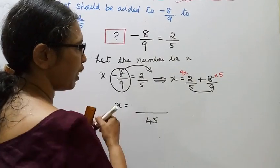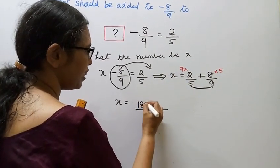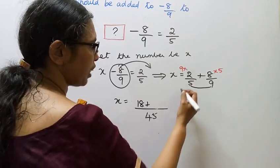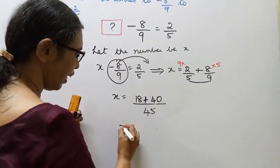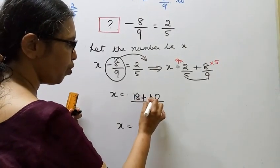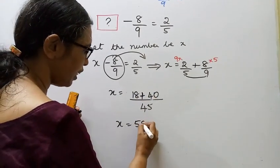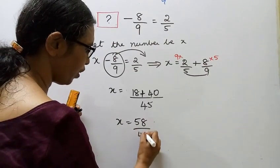So plus 8 times 5 is 40. x equals 18 plus 40, which equals 58 by 45.